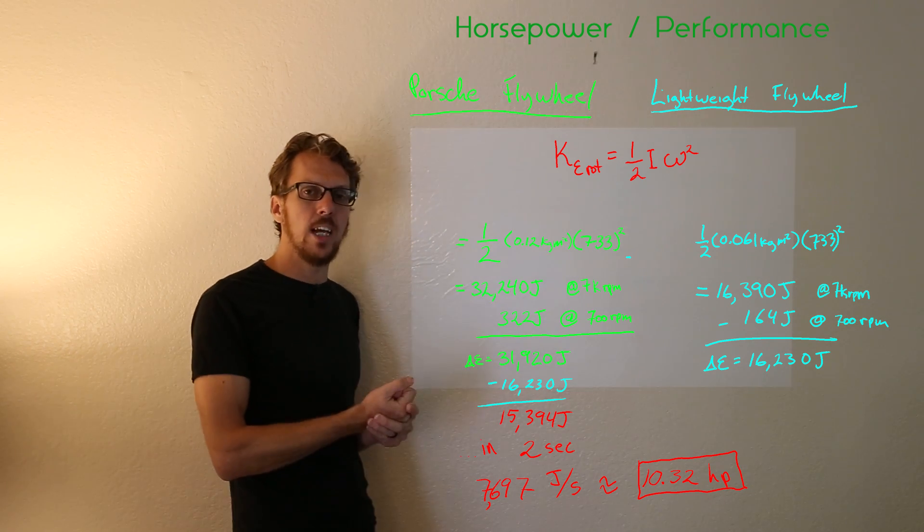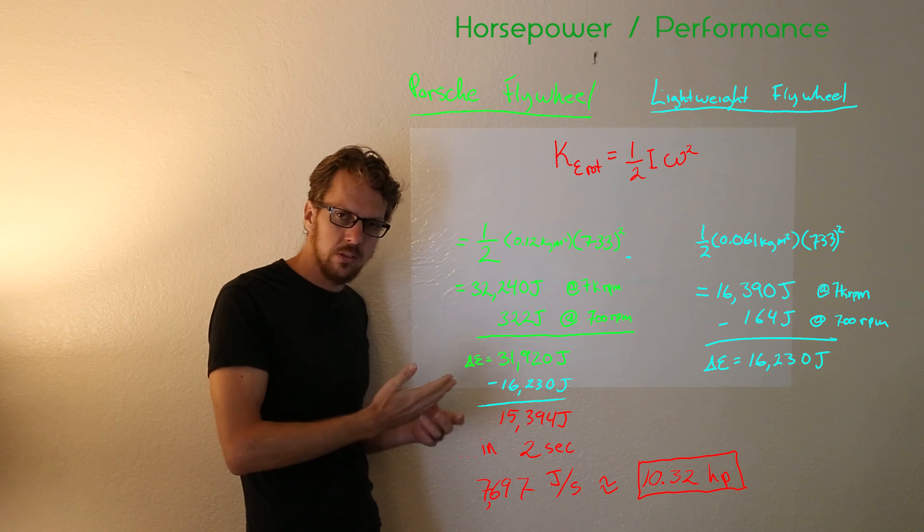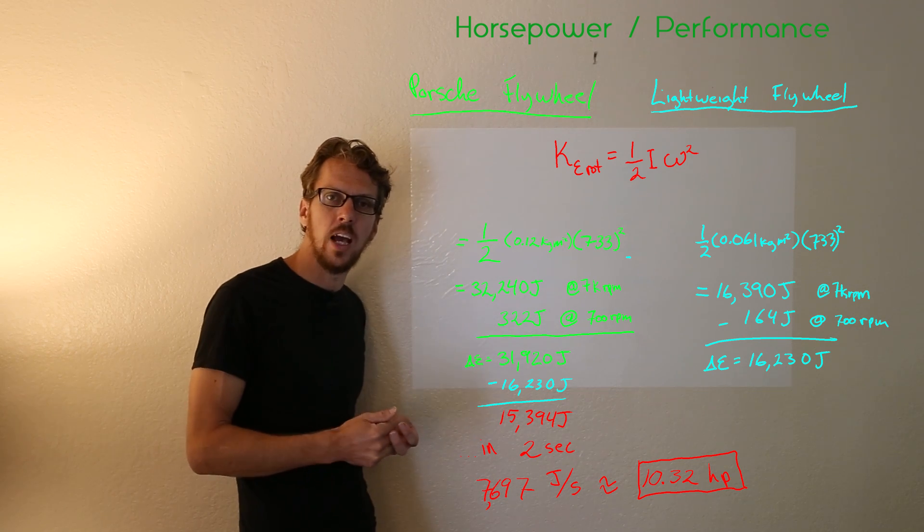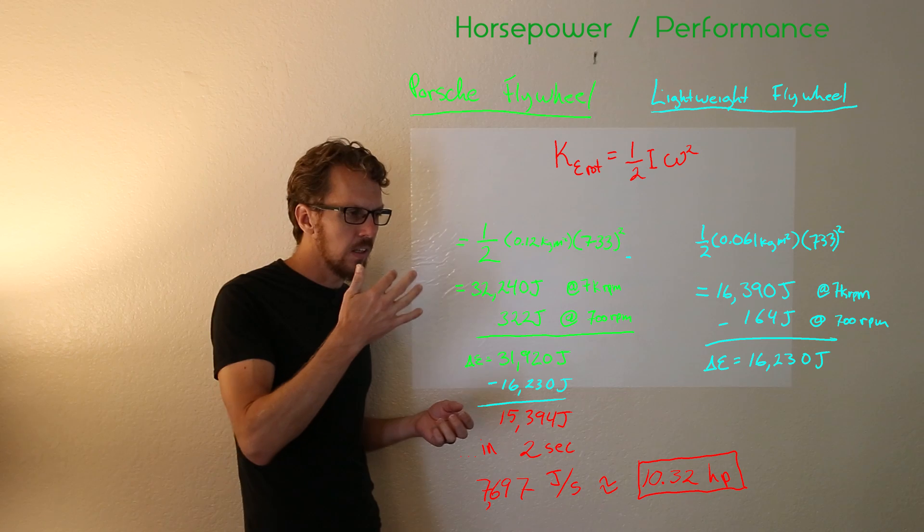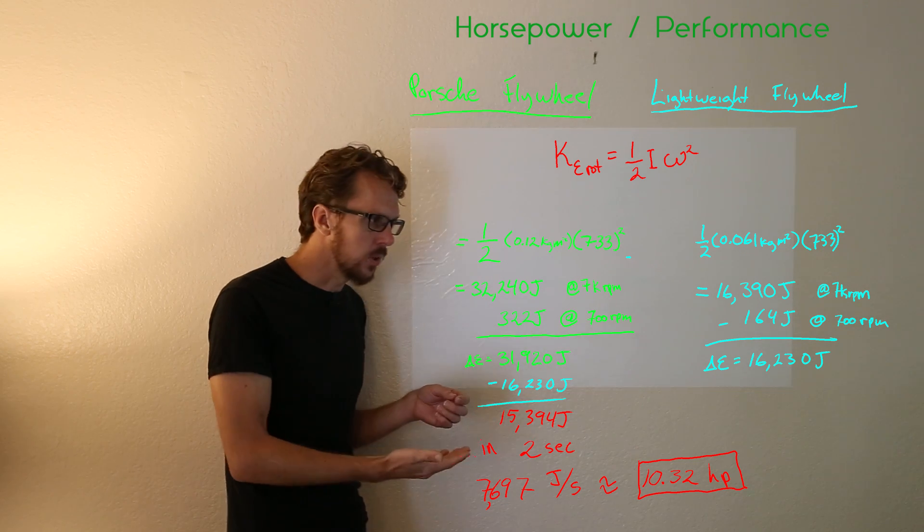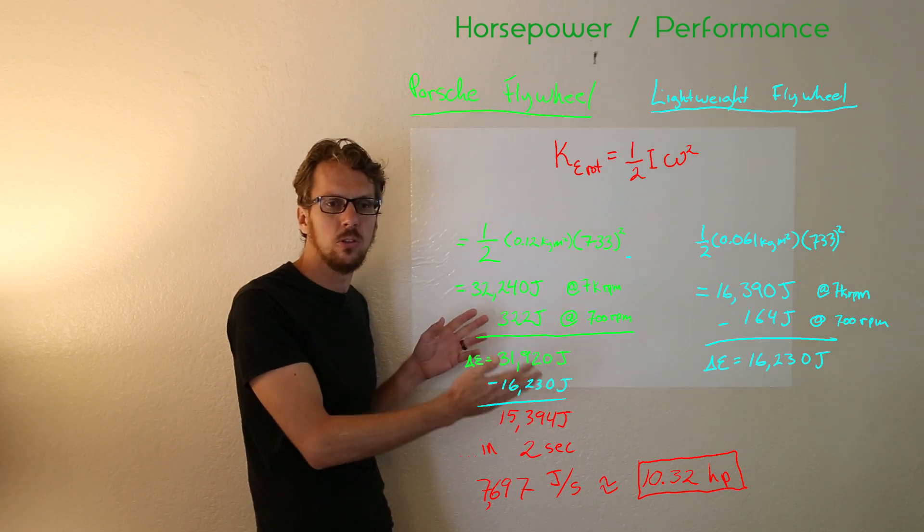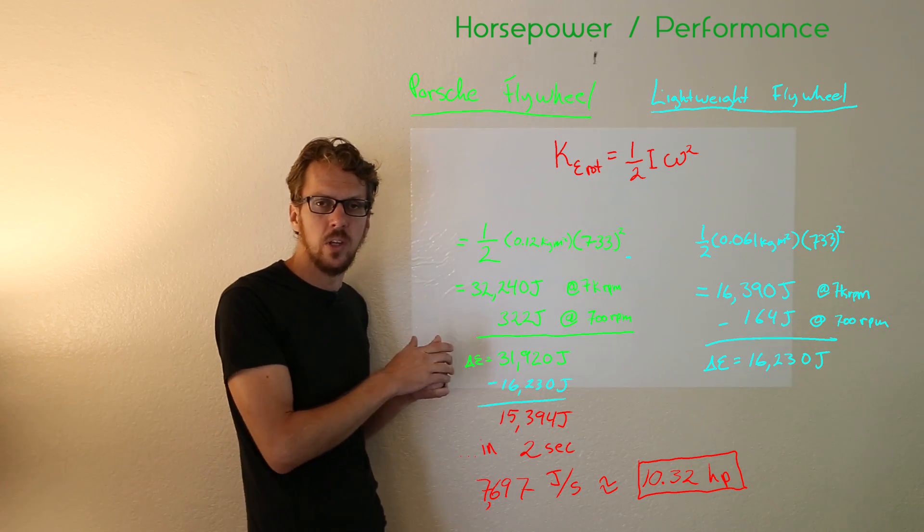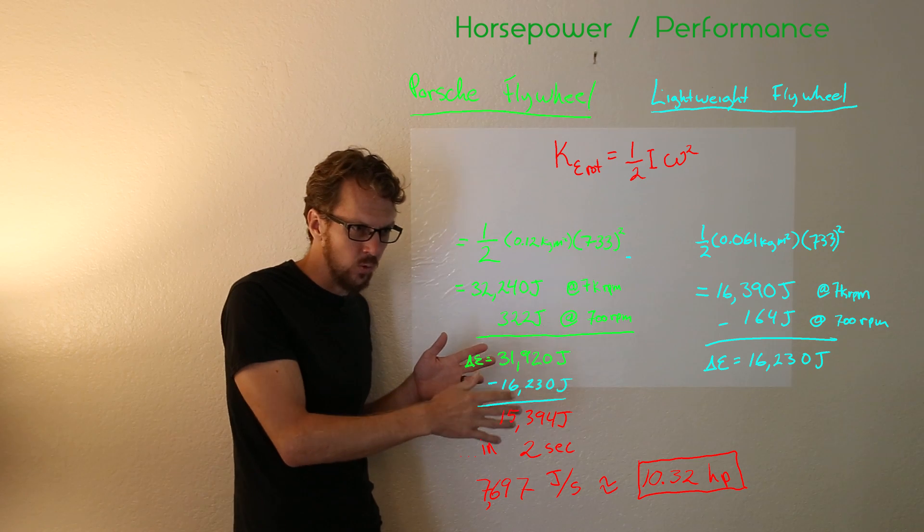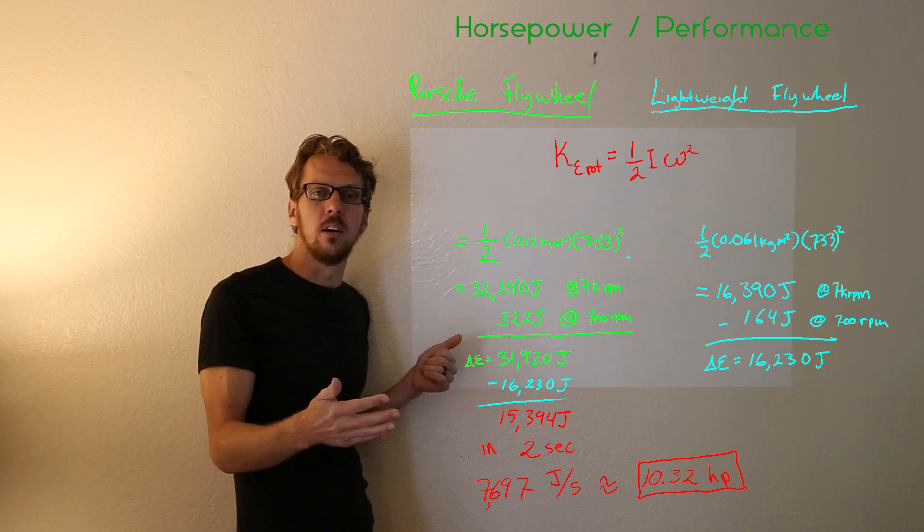Now obviously this is an idealized mathematical situation and in real world applications it's probably not going to be the equivalent of 10 horsepower to spool this heavier flywheel up. And it's also worth noting that this is the best case scenario. If you're only accelerating the flywheel from say 4000 RPM to 7000 RPM it's going to be a lot less horsepower to do that because you're starting at a higher RPM. There are very few situations in reality where you're going to start at idle at 700 RPM and spool all the way up to 7000 RPM. So you're really never going to see that big benefit of 10 horsepower.